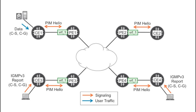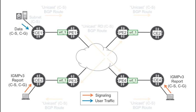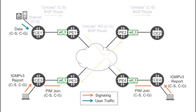SSM simplifies the job of the network, so it's the model chosen for this introduction. Note that receivers working in SSM mode use IGMP version 3. Once CE3 and CE4 realize there are downstream receivers, they start signaling the multicast distribution tree by sending a PIM join packet out of their upstream interface.